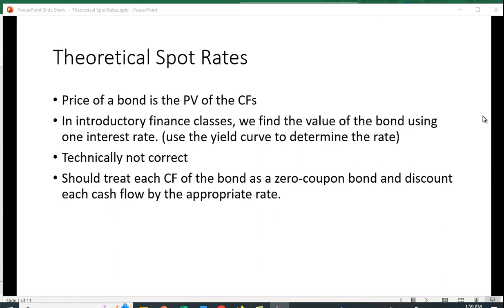I want to show you how you can calculate a theoretical spot rate. When we price a bond, it's the present value of the future cash flows, which would be the coupon and the return of principal, or the par value.